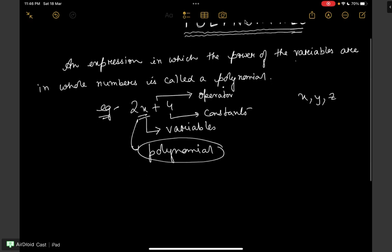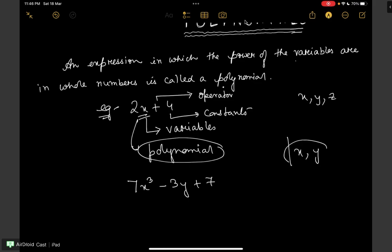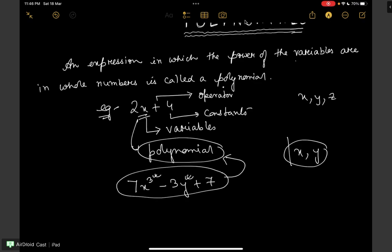Let's take another example: 7x cube minus 3y plus 7. The variables here are x and y. The power of x is 3 and the power of y is 1. If nothing is written as the power of the variable then the power is taken as 1. Therefore this also falls in the category of polynomial.